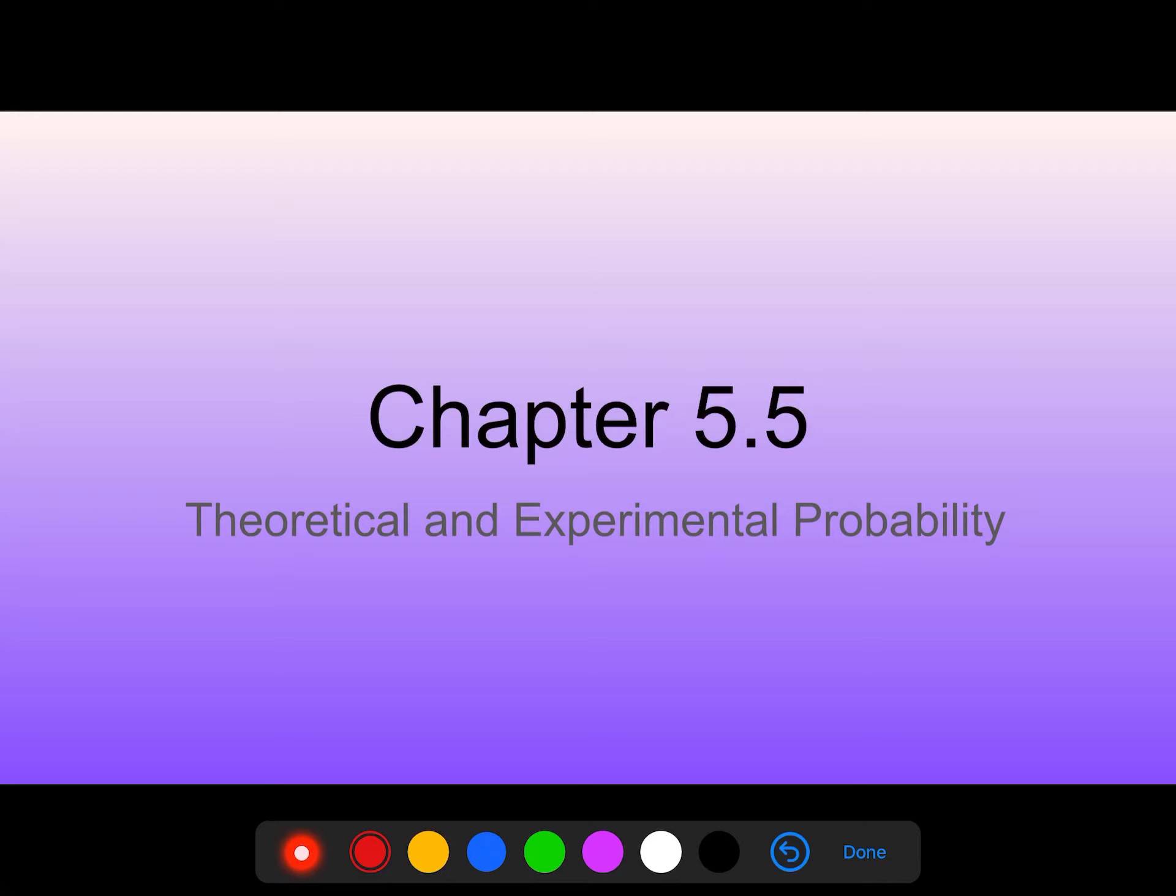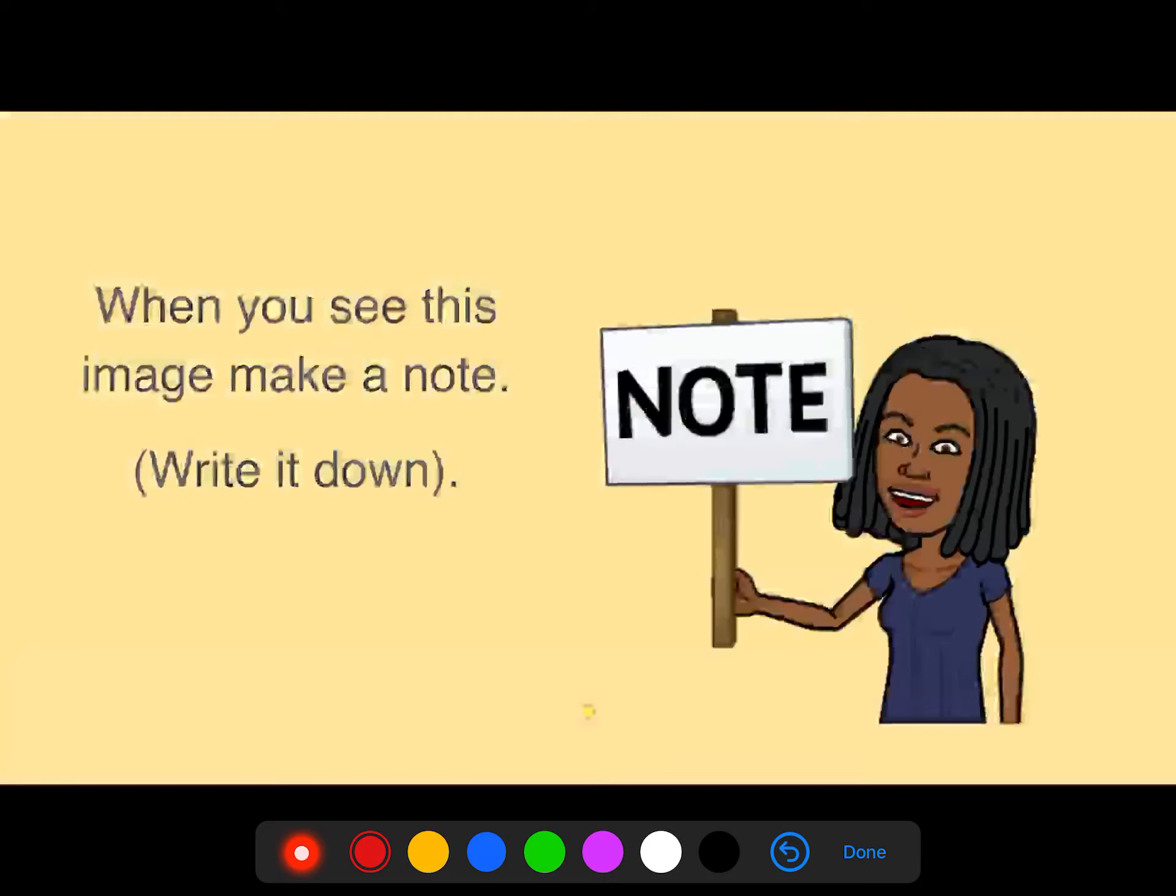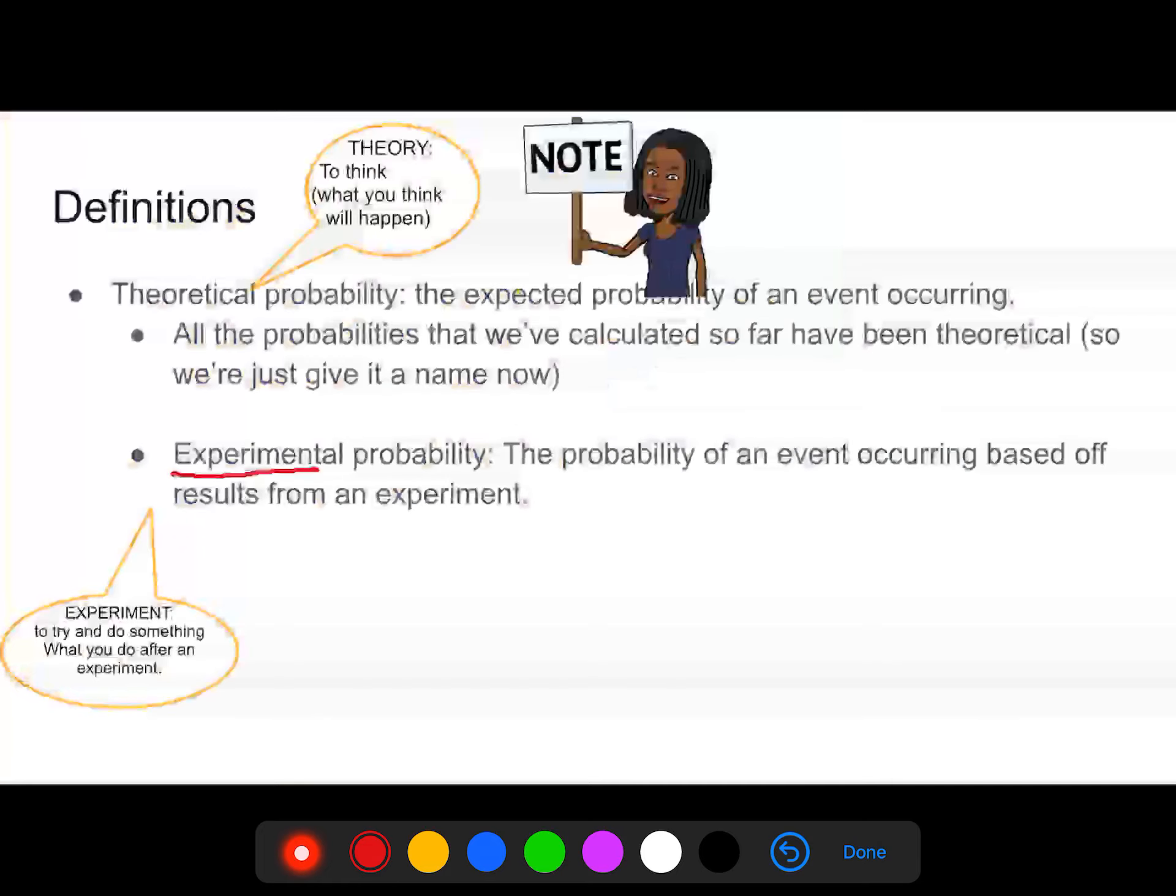Welcome to chapter 5.5, Theoretical Probability. So these are the objectives for this section. If you see this little image, please write it down, make a note of it. Yes, you need to write this down.